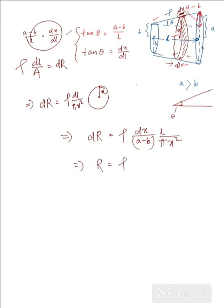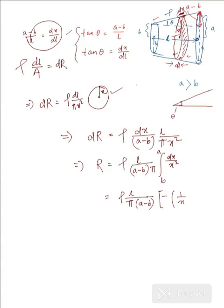We integrate this expression. All terms rho, L, (a − b), and pi are constants, so we have R = (rho * L) / (pi * (a − b)) times the integral of dx / x squared. The variable x, being the distance from the center, varies from the smaller radius b to the larger radius a. Evaluating the integral of x to the minus two gives minus 1/x, evaluated from b to a.